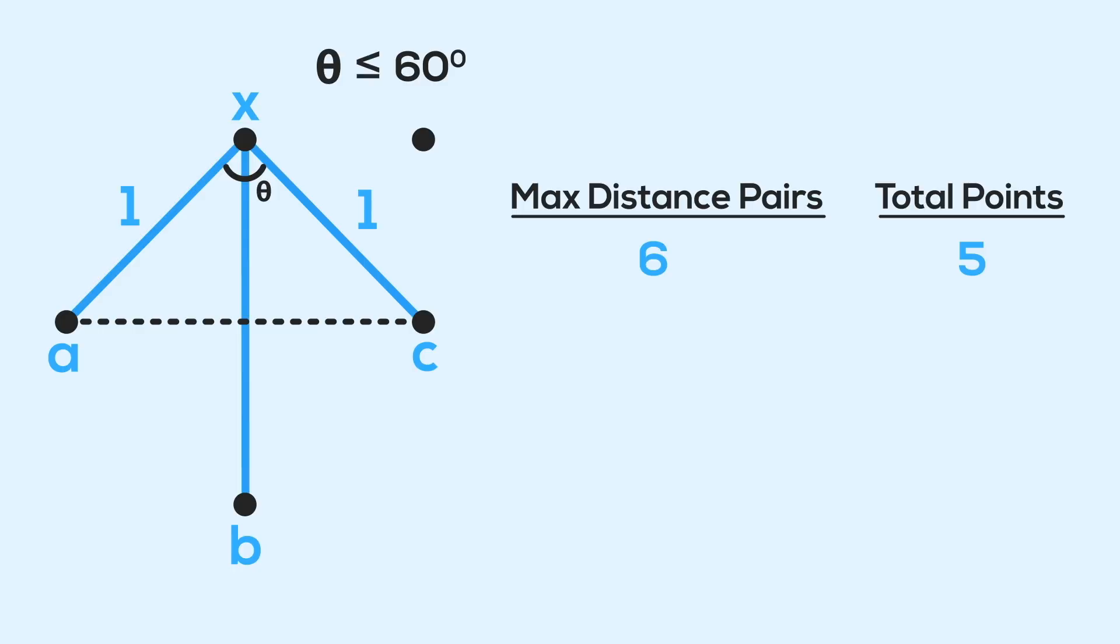Alright, promise we're almost there, because now it's more apparent that there is no other point, besides X, that can pair with point B, where the distance between them is 1.